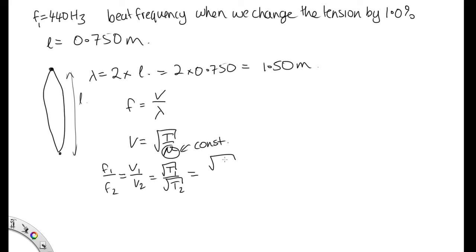T1, that was our original tension T1. And then T2 is increased by 1%, which tells us that T2 is equal to 1.01 times T1. So we can put this over the square root of 1.01 T1. These square roots of T1 cancel out, and we have F1 over F2 is equal to 1 over the square root of 1.01.